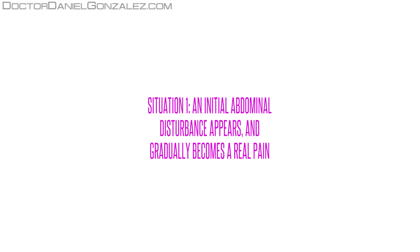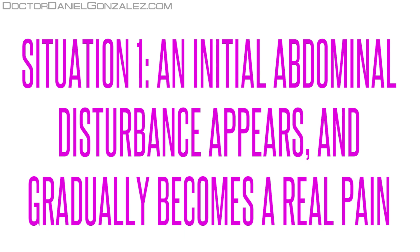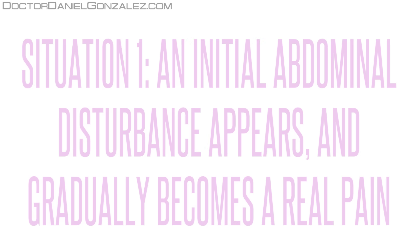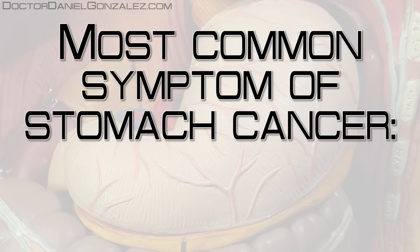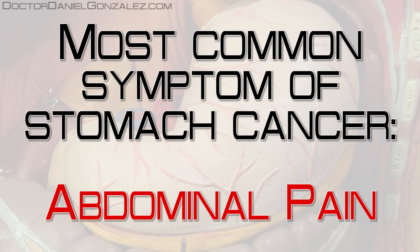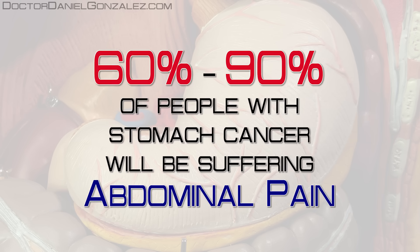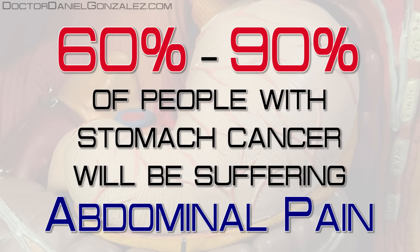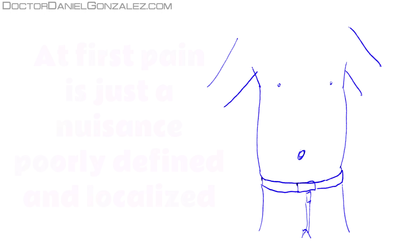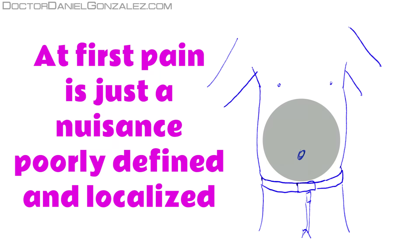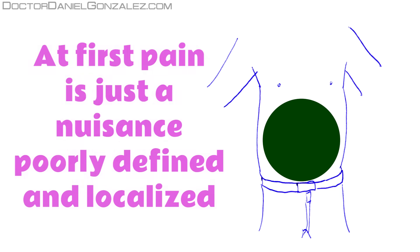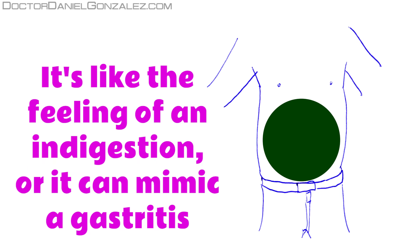Situation 1. An initial abdominal disturbance appears and gradually becomes a real pain. The most common symptom of stomach cancer that has not spread outside the organ is abdominal pain. Between 60 and 90% of people with gastric cancer will be suffering abdominal pain. It is a pain that begins as a nuisance, poorly defined and poorly localized in the abdomen, similar to the feeling of indigestion or the abdominal disturbance of people with gastritis.